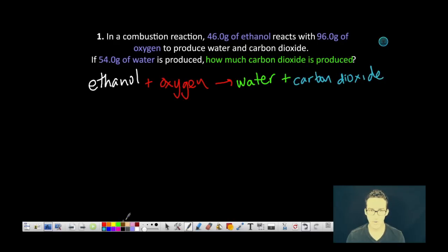We are also given the mass of ethanol that we start with, 46.0 grams. The mass of oxygen we start with is 96.0 grams. And we know the amount of water that is formed, 54.0 grams.